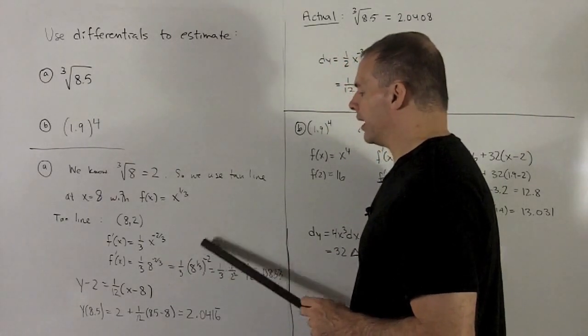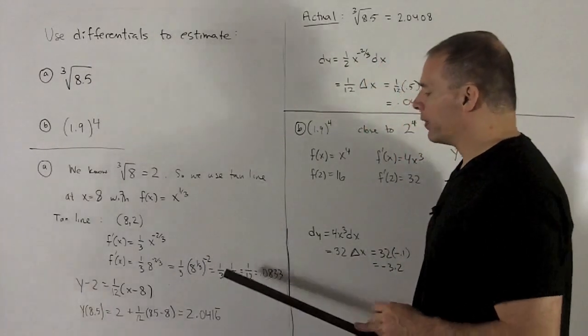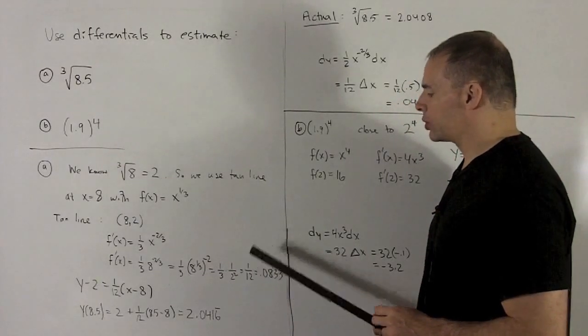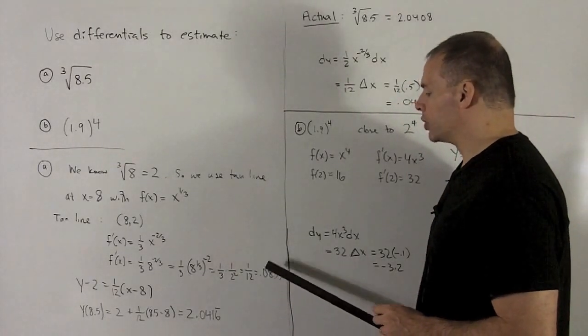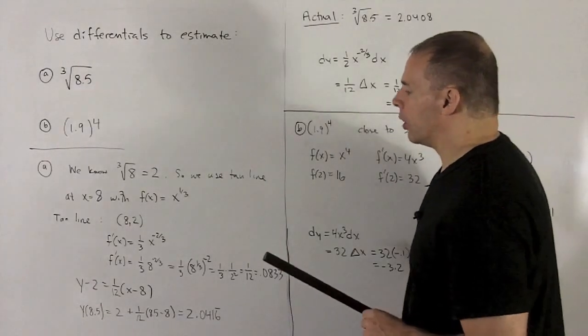So it'll give me one-third, 8 to the one-third to the minus two. But I know 8 to the one-third is two. So I'm looking at one-third times 1 over 2 squared, or 1 twelfth, which is 0.08333 repeating.